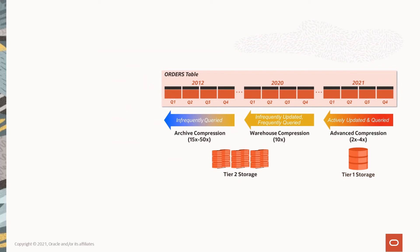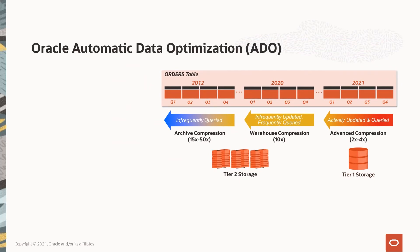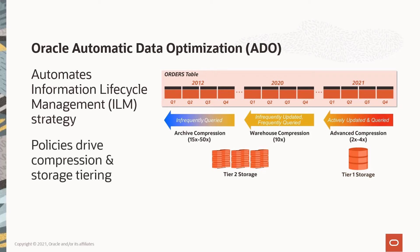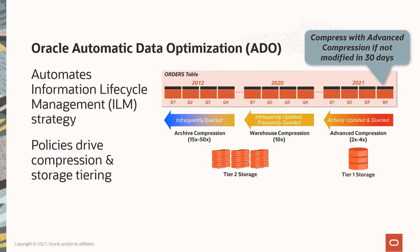The final step in implementing our ILM strategy is to use Oracle Automatic Data Optimization, or ADO, to automate the entire process. ADO lets us create policies that specify different compression levels for each storage tier and control when data movement takes place. Let's look at a few examples of what policies might look like. We might decide to only compress our data once it has not been modified for over 30 days.